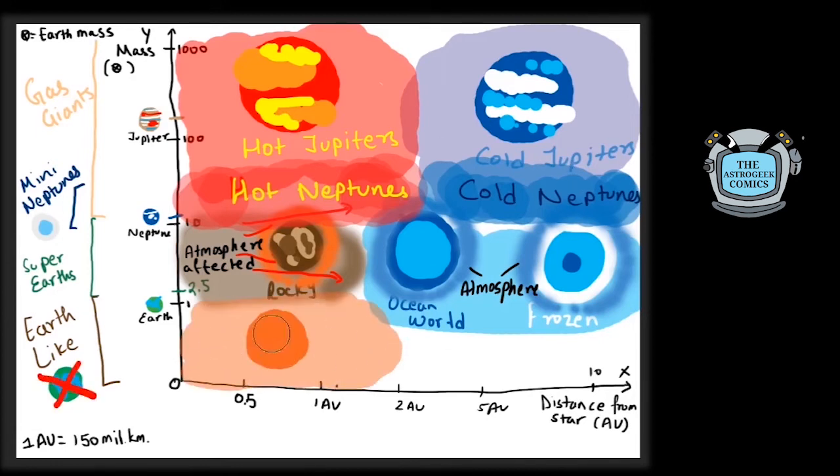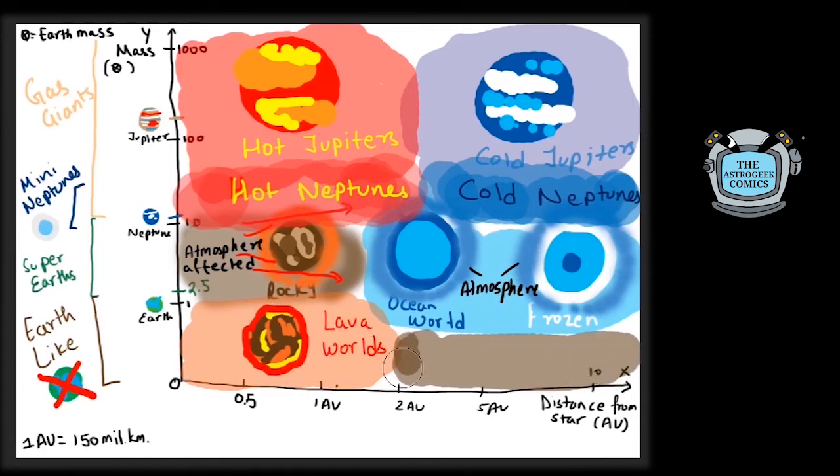When these small rocky planets are very close to the star, their surfaces can reach melting temperatures and these planets may be eternally covered with lava and are called lava worlds.